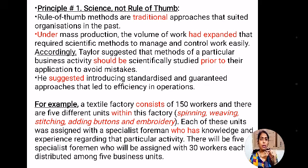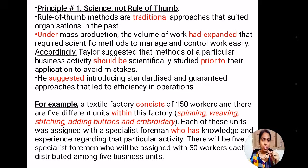For example, a textile factory consists of 150 workers and five different units: spinning, weaving, stitching, adding buttons, and embroidery. Each of these units was assigned a specialist foreman — one specialist in spinning, another in weaving, another in stitching, another in adding buttons, and another in embroidery.